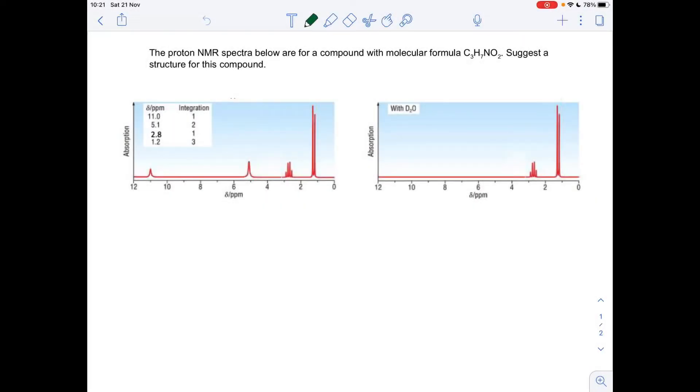I've got a protein NMR question here where you've got to work out the structure of this compound with molecular formula C3H7NO2. And it's one of the rare questions where D2O is applied. So if you wanted to have a go at that, just pause the video, all the information you need is on the screen there, and then play on for the answers.